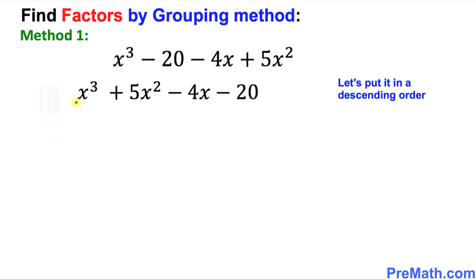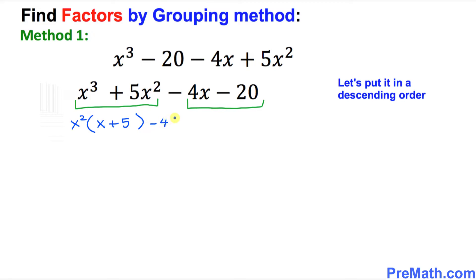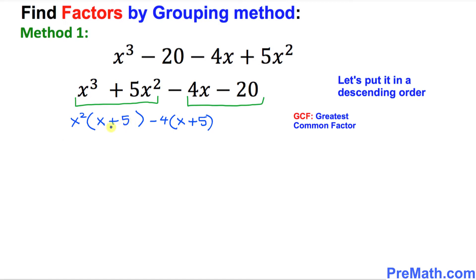So right now let's go ahead and make the grouping. Let's do the group of these first two and then these two over here. Can you see what could be factored out in this first group? We can see x squared is in common. I can factor that out and in the parentheses we are left with simply x plus 5. In the second group, negative 4 is in common, and once you take that out, we are left with x plus 5. By the way, x squared and negative 4 that we took outside are called GCF — greatest common factors.